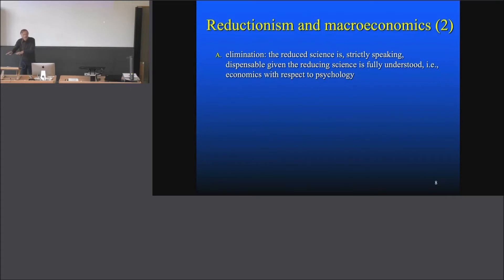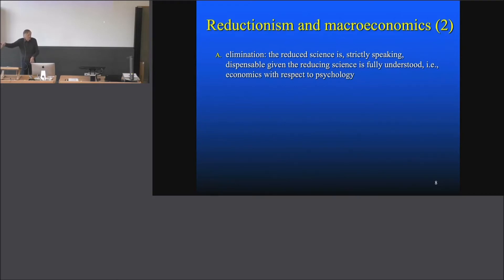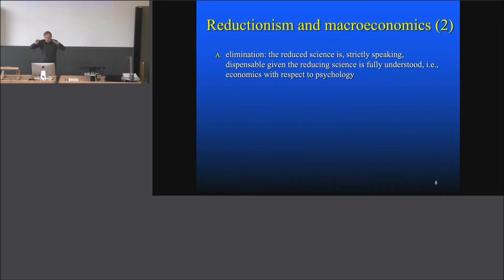He is a macroeconomist, and he thinks that as soon as you have reduced macroeconomics to microeconomics, macroeconomics becomes dispensable — it'll be destroyed. And because he's a macroeconomist, he doesn't want that. This is a psychological thing I'm describing, but it's quite obvious, and we will have substantial arguments. You find this in many places: those people who work in a scientific field that is going to be reduced react very often saying they don't want that, because then the field is eliminated.